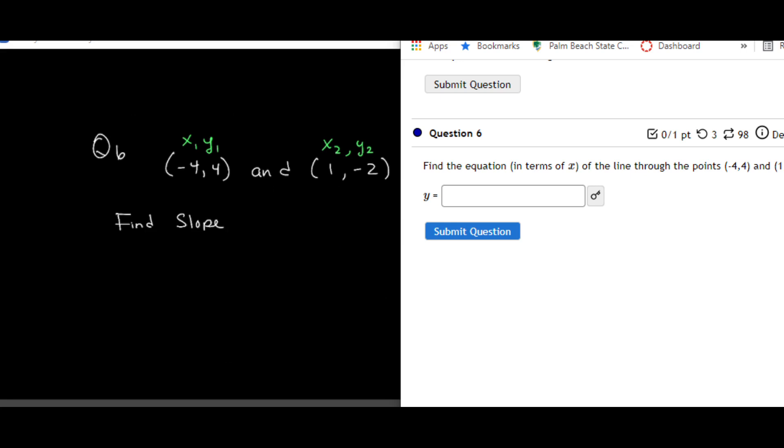That's always my first step. Whenever you find an equation, your first step is going to be to find the slope. So slope is the change of y, or y2 minus y1, over x2 minus x1. So y2 is negative 2, minus y1, which is 4, all over x2, which is 1. And then I want to subtract x1, which in this case is a negative 4. So make sure you put that negative 4 in parentheses here.